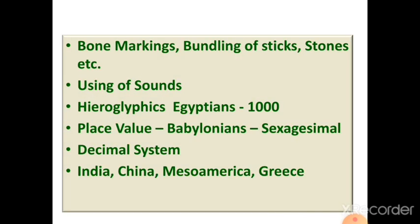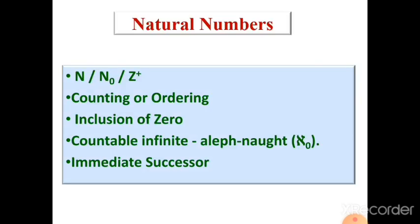Now we move into natural numbers — the first basic numbers used for counting. Natural numbers include 1, 2, 3, and so on. Nowadays, most books and writings also include zero in the set of natural numbers, rather than treating it separately as a whole number. Natural numbers are denoted by various symbols: N, N-naught, or Z-plus. These numbers used for counting are called natural numbers.